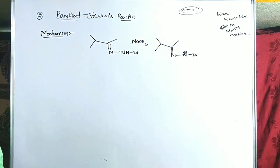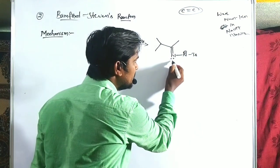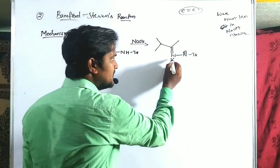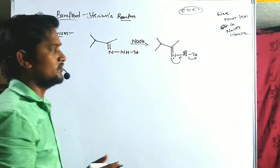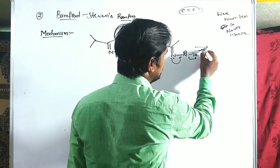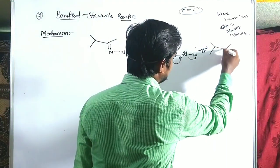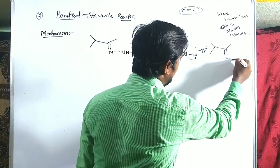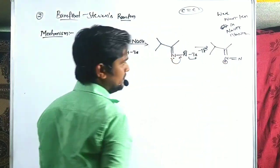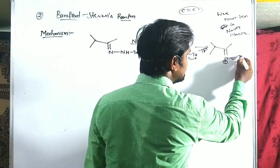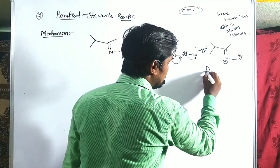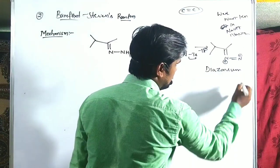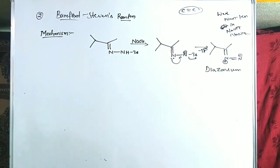Here the N-minus ion is formed. The lone pair of electrons on nitrogen helps to eliminate the tosyl group as a tosylate anion. This forms a C=N double bond with a positive charge on one side and a negative charge already present, which is nothing but a diazonium compound.